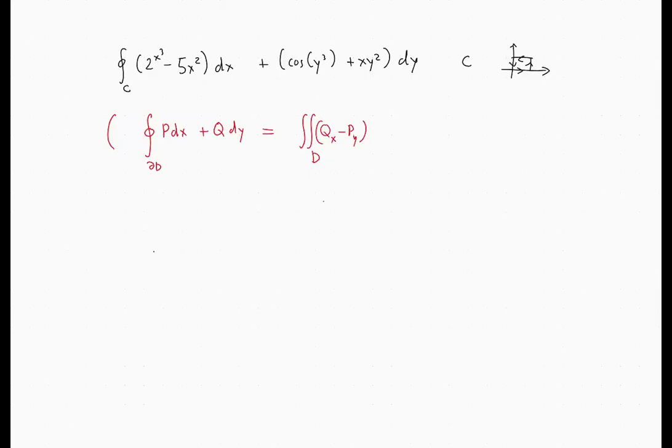So how do we solve this problem? This is our P and this is our Q. So what is Q_x minus P_y? It's going to be y². That's the only thing that survives differentiation with respect to x. And as for P, the whole thing depends on x, so the derivative is 0. So it's simply y².